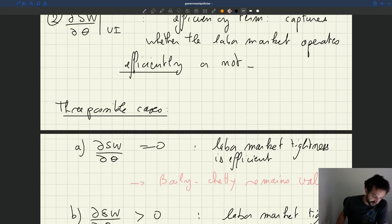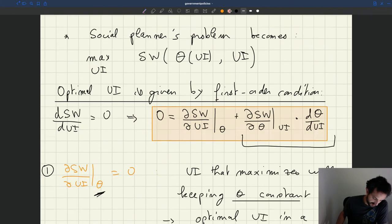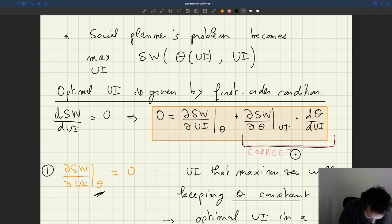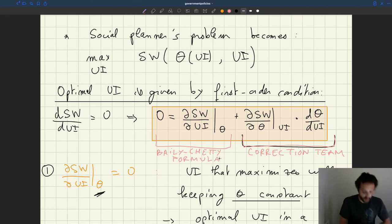If we go back to this formula that we had, right, so this extra term that we have here, we can call this a correction term because it corrects the Baily-Chetty formula, which is a standard kind of public finance formula, well-known in public finance and labor. So if we have dθ/dUI which is zero, that second factor in the correction term is zero, the correction term is zero.